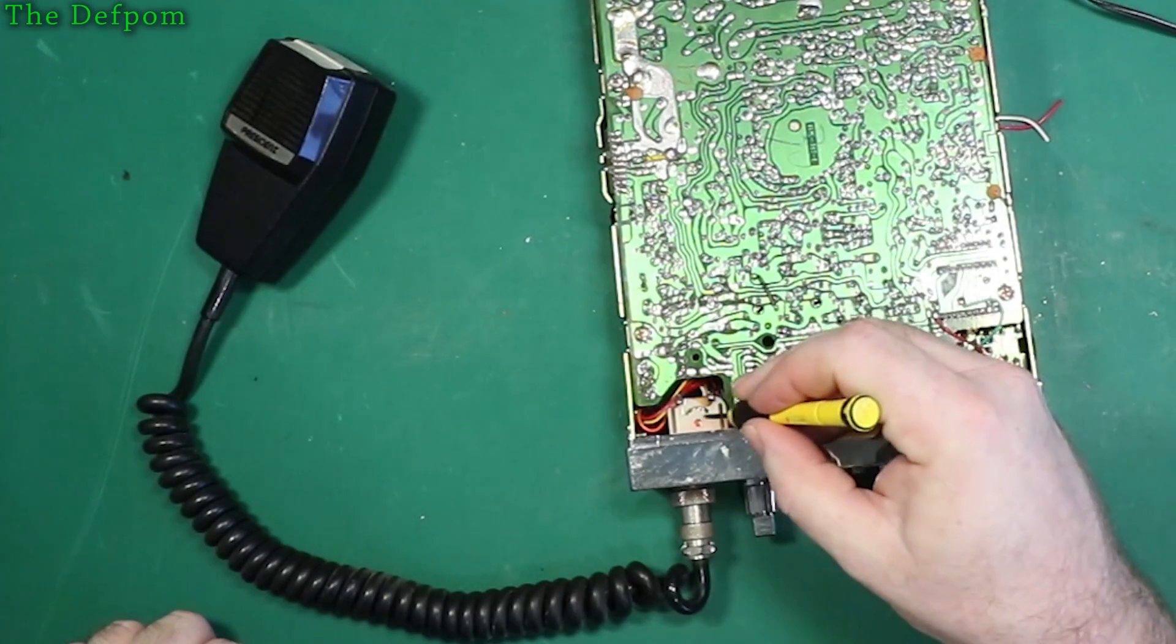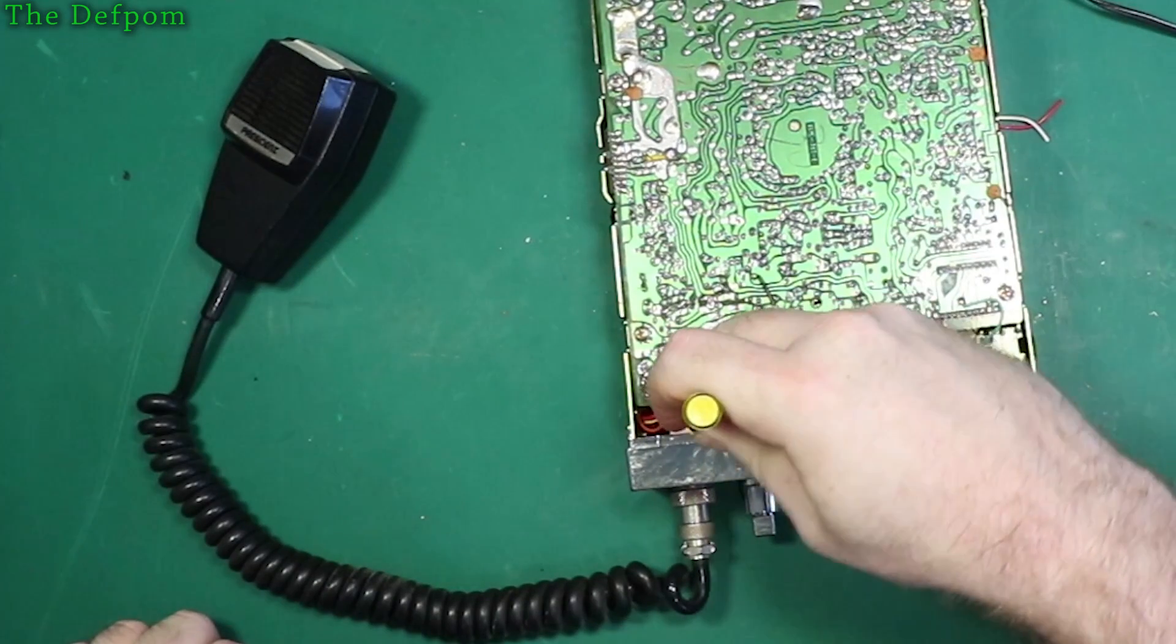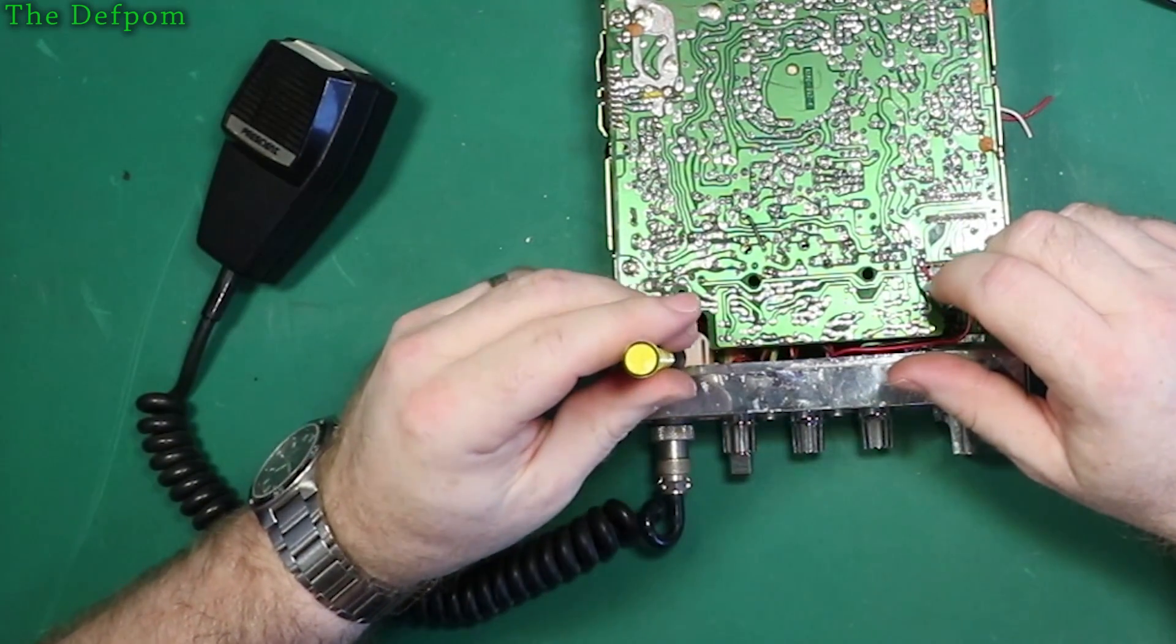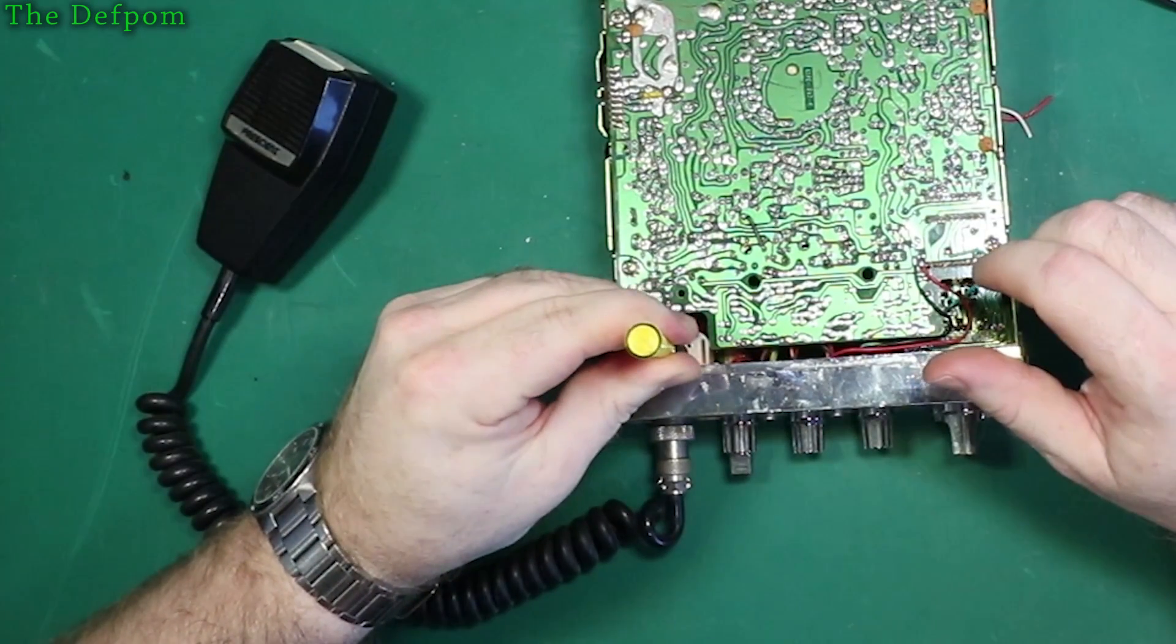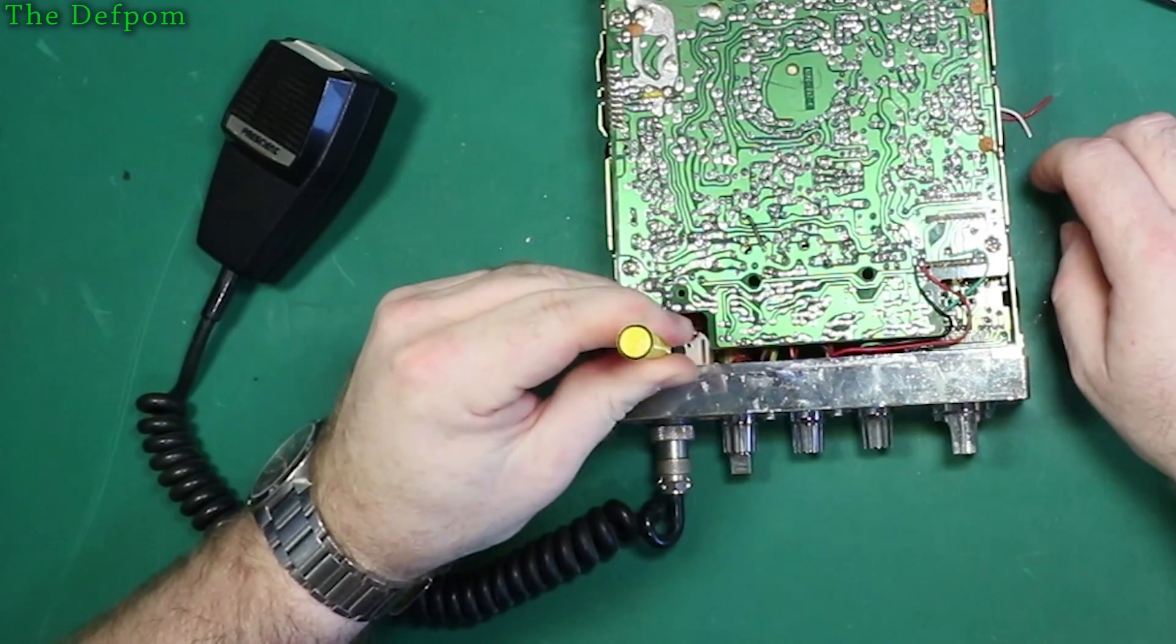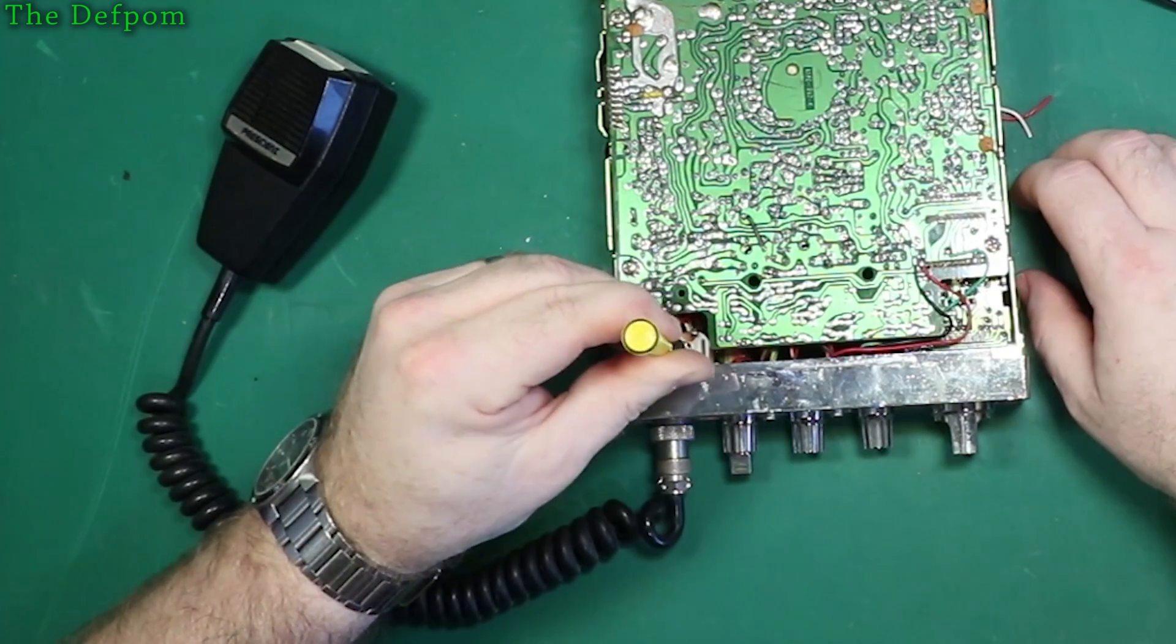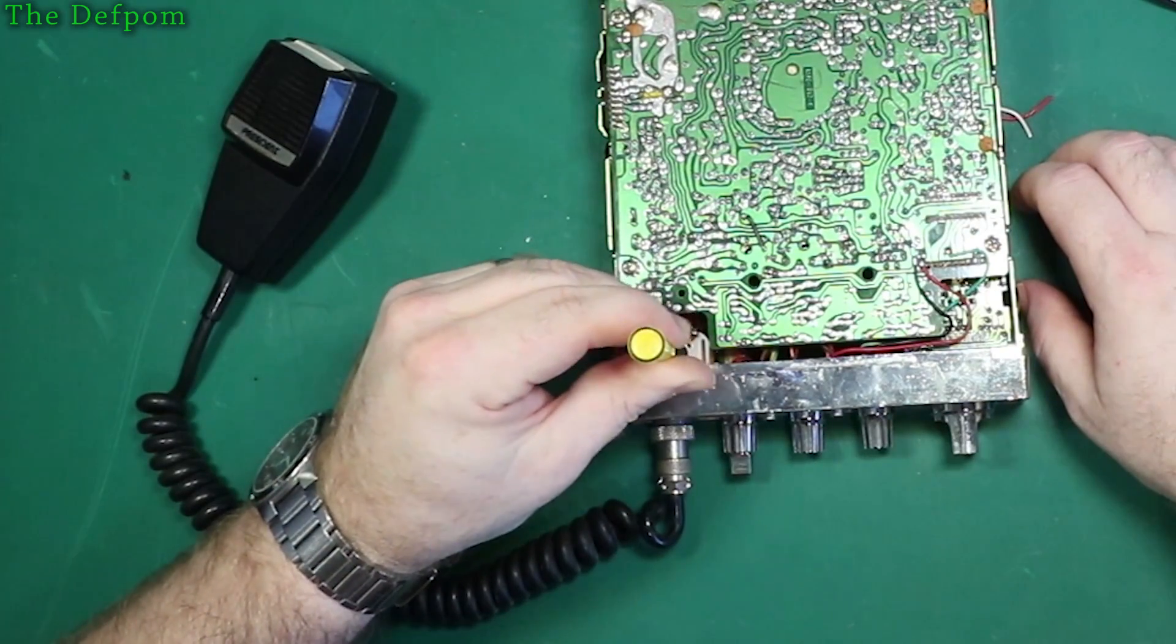Usually you can free it up just by screwdrivering the adjustment that's just there. Let's poke a hole through that tape. Usually you can just loosen that screw off a little bit and work it, and it'll come free.